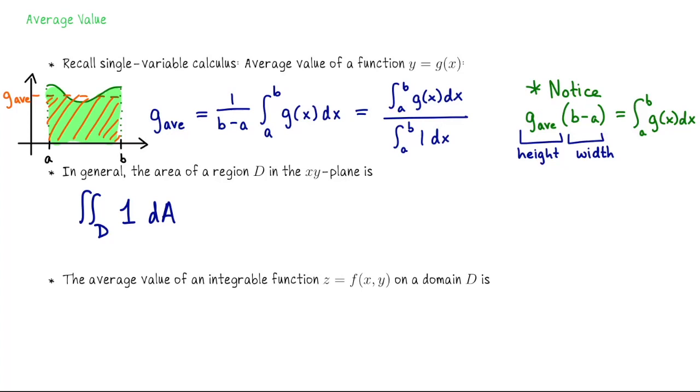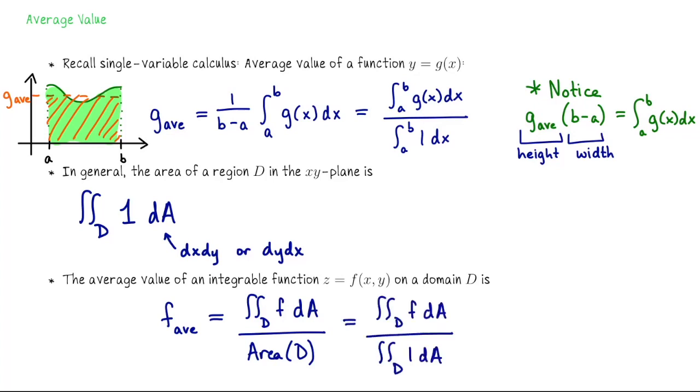We have the same notion when we go up in dimension. The area of D in the xy plane can be computed by integrating 1 over D. Then the average value or average height of a function z equals f of x and y over the domain D is equal to the integral of f over D divided by the area of D. Or you can write that as a ratio of integrals: the integral of f over D divided by the integral of 1 over D. By multiplying that denominator over to the left, we realize that's giving us a height for a cylinder with base D whose volume would exactly match the volume enclosed between the graph of f and the xy plane.